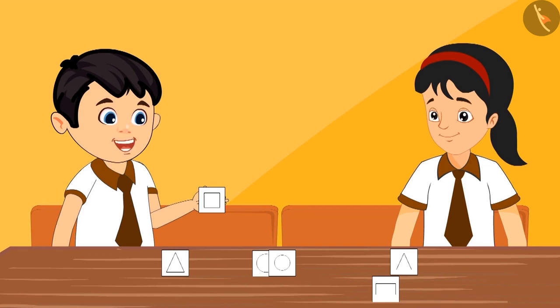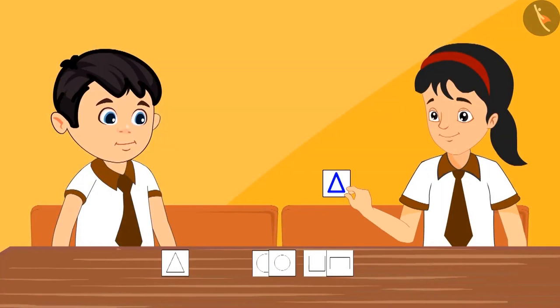Pinky, look. This shape is made of four lines. We can keep it aside. Yes, Chotu, and this shape is also made of four lines. We should keep it with the other four-sided shape.